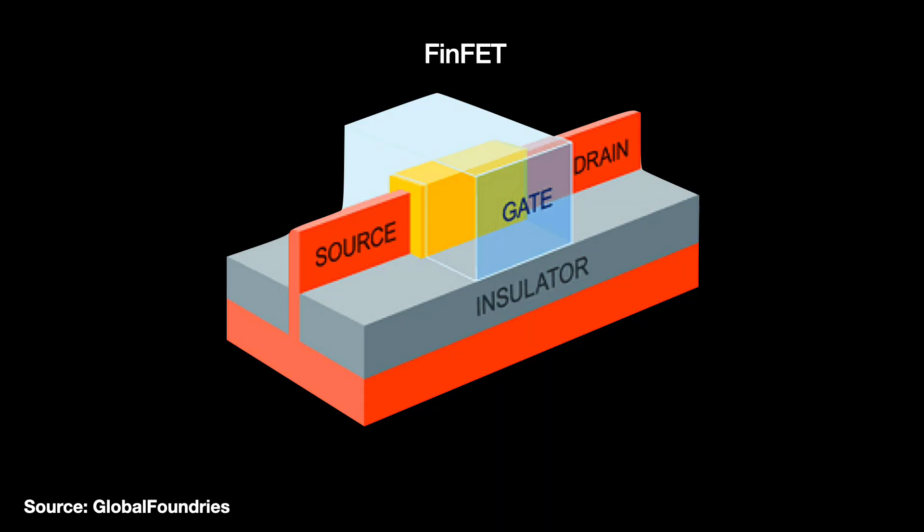Parasitic resistance occurs in leading-edge FinFET transistors at two places. First, where the current travels up to the 3D fins from the rest of the circuit and vice versa. And second, the current hits resistance as it passes through the FinFET gate itself. This is in part due to the gate's very thinness. There's just not enough conducting metal for the current to travel easily through.